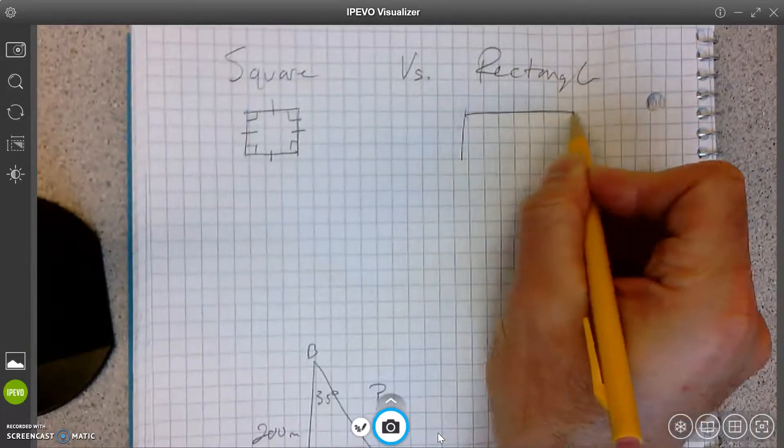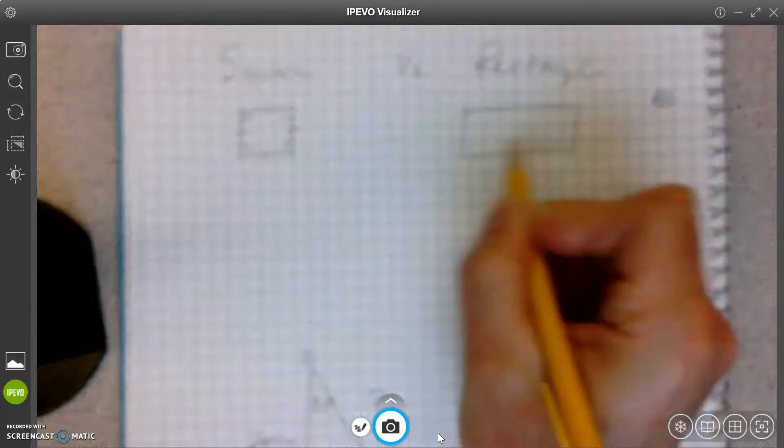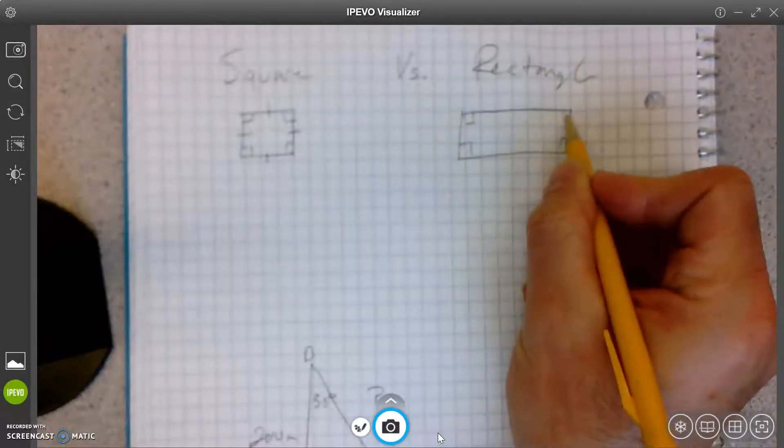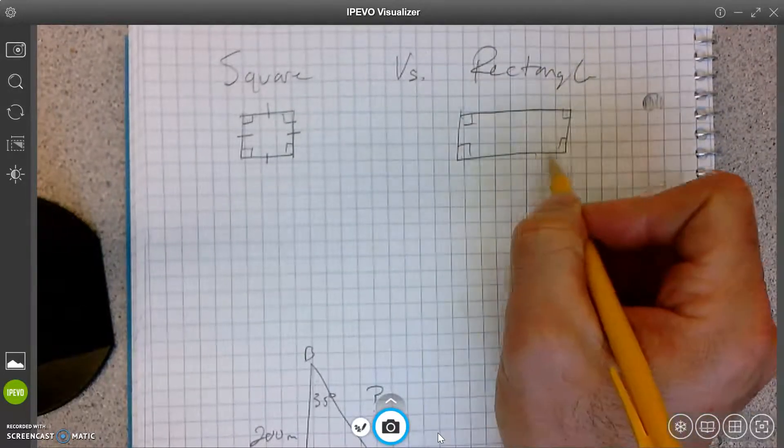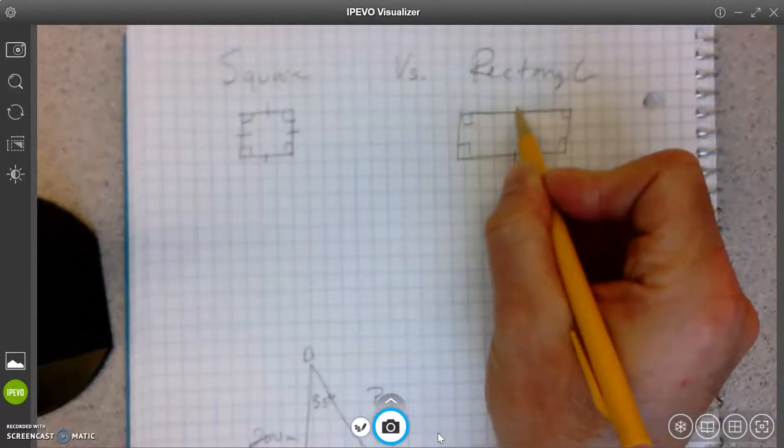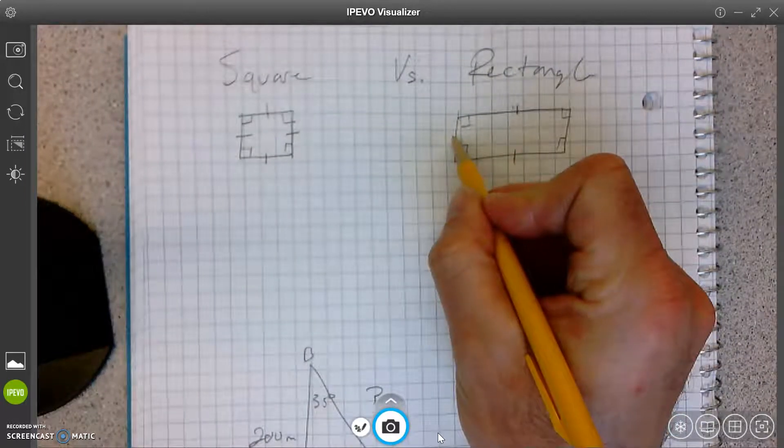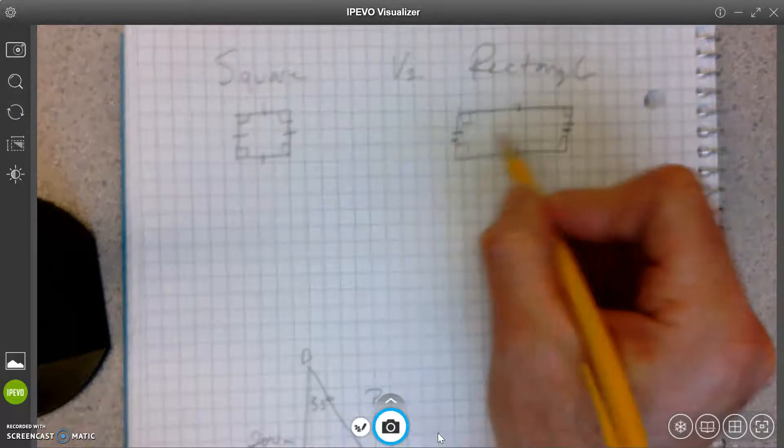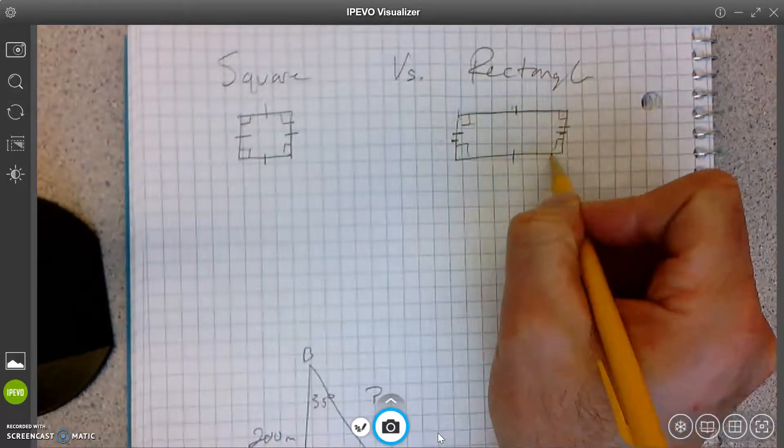And a rectangle has all right angles also. So 90, 180, 270, 360, all the interior angles add up to 360. But, uh-oh, opposite sides are parallel and congruent. So not all the sides are the same.